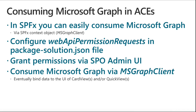We can simply rely on the MS Graph client type. We need to define in the package-solution JSON file of our solution the Web API permission requests that we want to have satisfied from a permission requirement point of view. We need to grant those permissions to the solution that we created with SPFx for the Adaptive Card Extension.